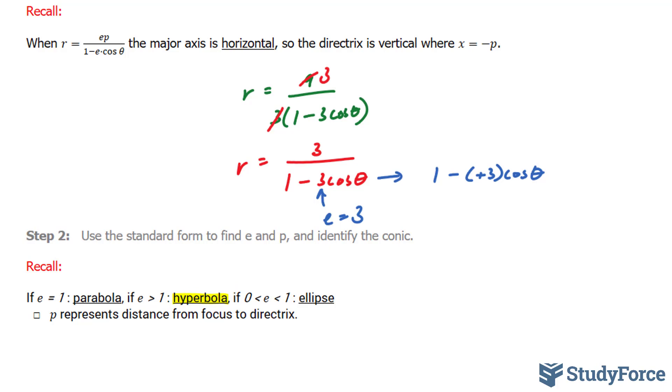Furthermore, we need to find out what p is because that's related to the directrix. And if you take a look at the standard equation, we have e p at the top. So I'll set 3 equal to e p.